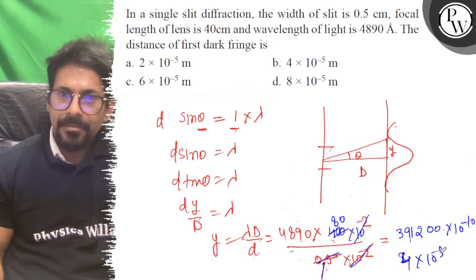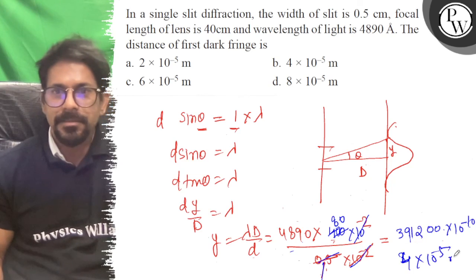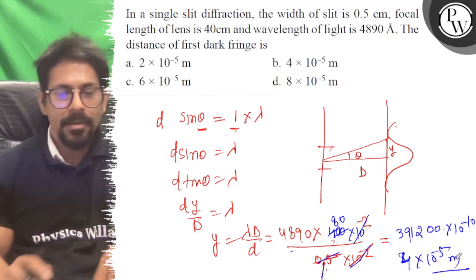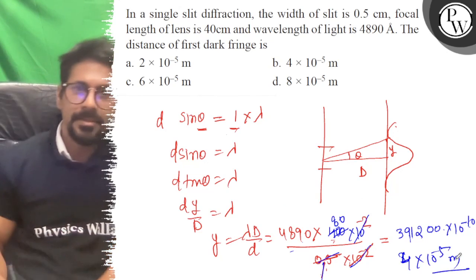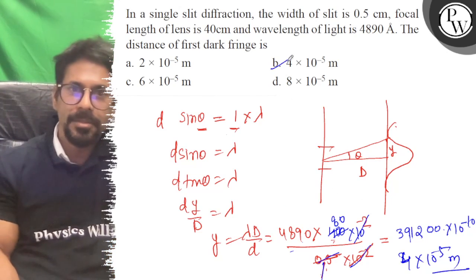4 into 10 to the power of minus 5 is the correct answer, so the right answer to the question is B. All the best.